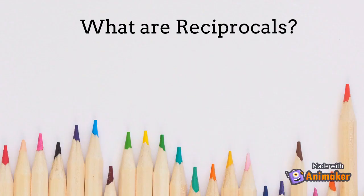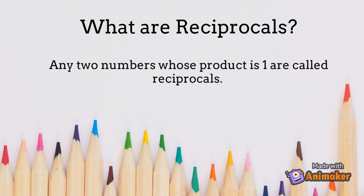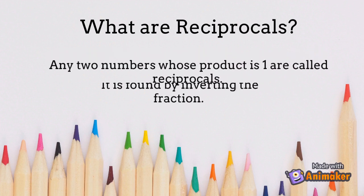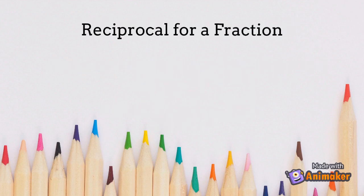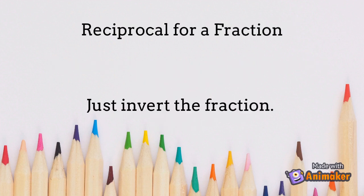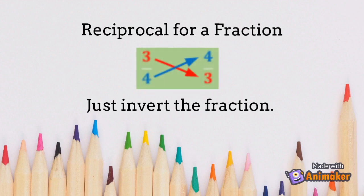What are Reciprocals? Any two numbers whose product is one are called Reciprocals. It is found by inverting the fraction. To find the reciprocal of a fraction, just flip it over. Example: 3 fourths — when you flip it over, its reciprocal is 4 thirds.